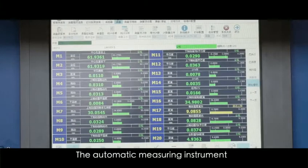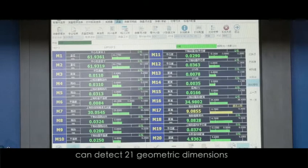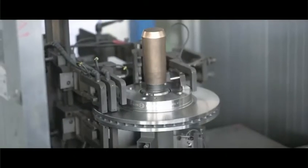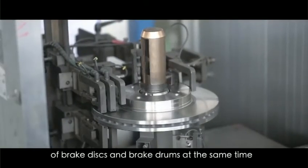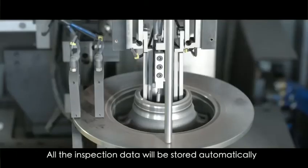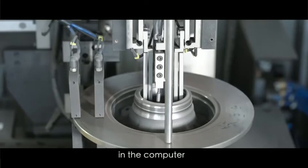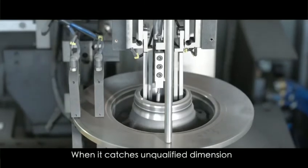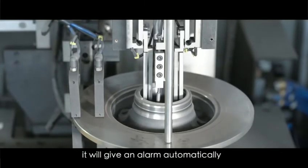The automatic measuring instrument can detect the 21 geometric dimensions of Brake Discs and Brake Drums at the same time. All the inspection data will be stored automatically in the computer. When it finds an unqualified dimension, it will give an alarm automatically.